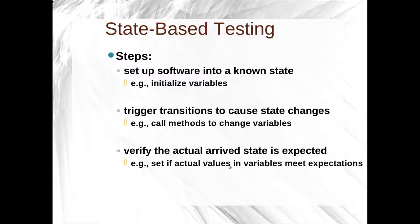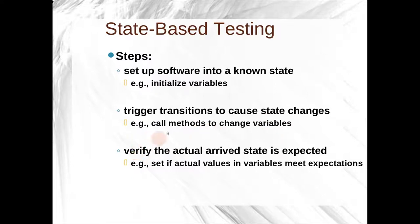For example, if I want to make sure that when I update a database the value is updated: first, I get a connection to the database, then I insert a value with a set ID and associated values. Then I run update — I trigger a state change telling it to update that row with new variables. Then I select that row again from the database and verify that for every variable I changed, it was changed in the database. That's state-based testing, and it's the common method used by JUnit and other frameworks — setup, trigger state change, verification, and sometimes teardown.